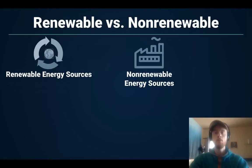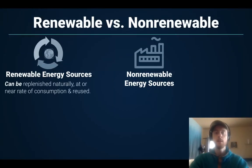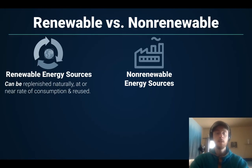A renewable resource is one that can be replaced or regenerated naturally when it's used at or near the rate of regeneration. That's key — we can't use it faster than it regenerates, otherwise it's not really renewable anymore and can become exhausted.